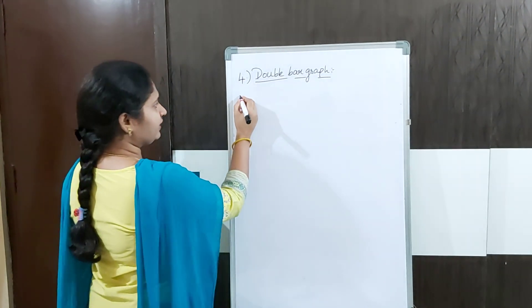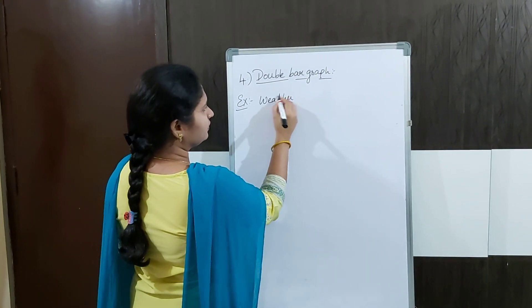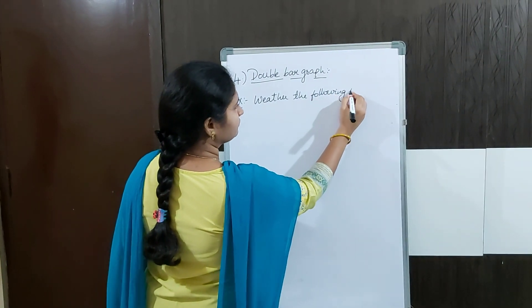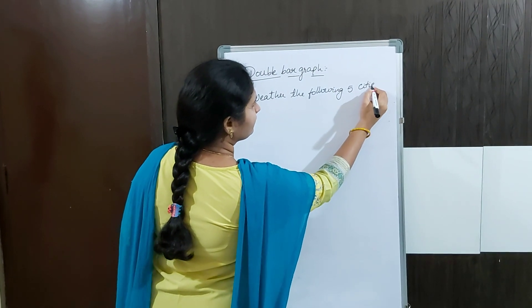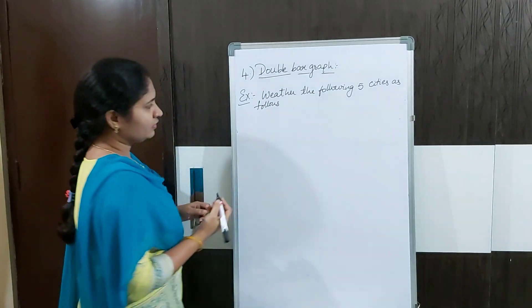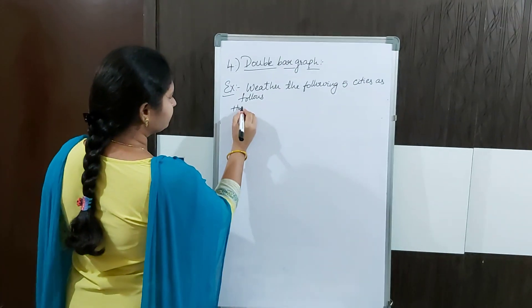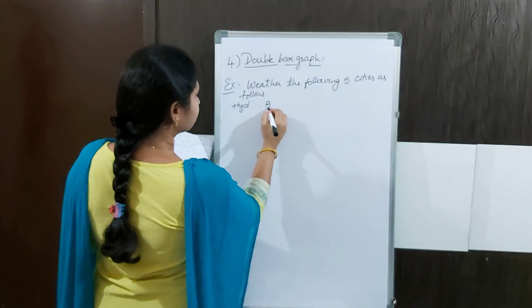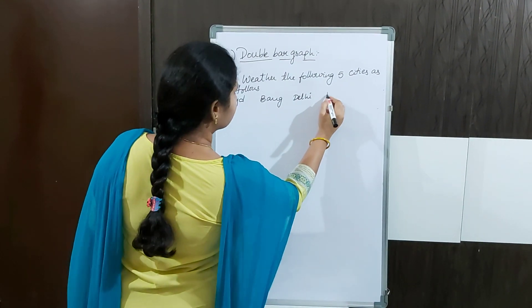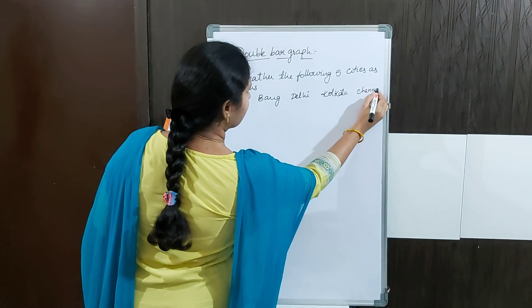Suppose I am taking one example here — the weather forecast of the following five cities. The cities I am taking are Hyderabad, Bangalore, Delhi, Kolkata, and the last one is Chennai.